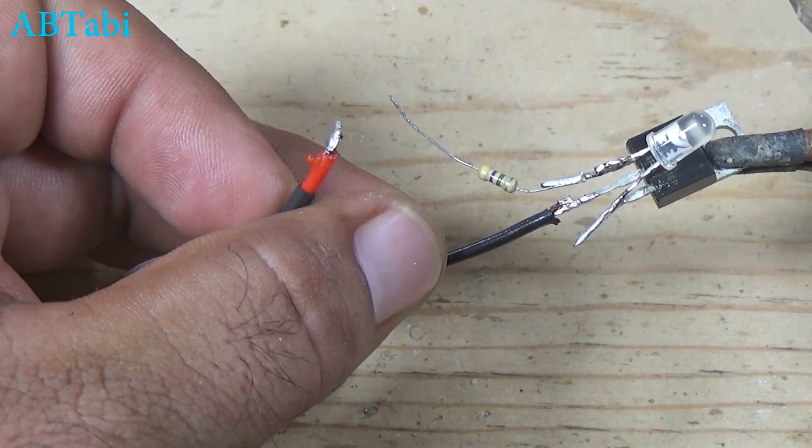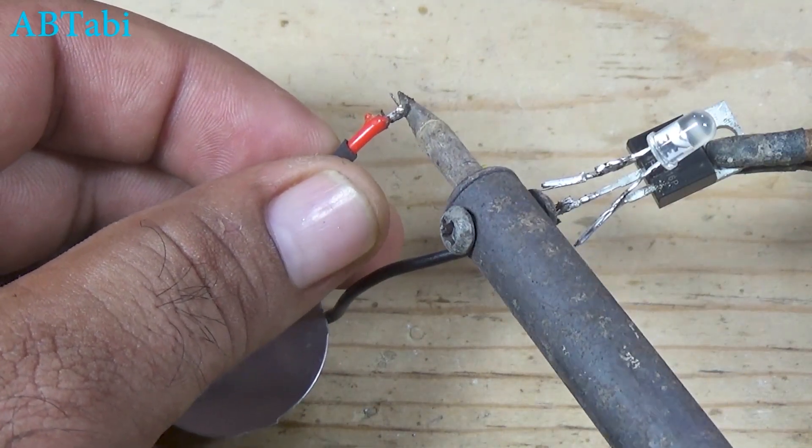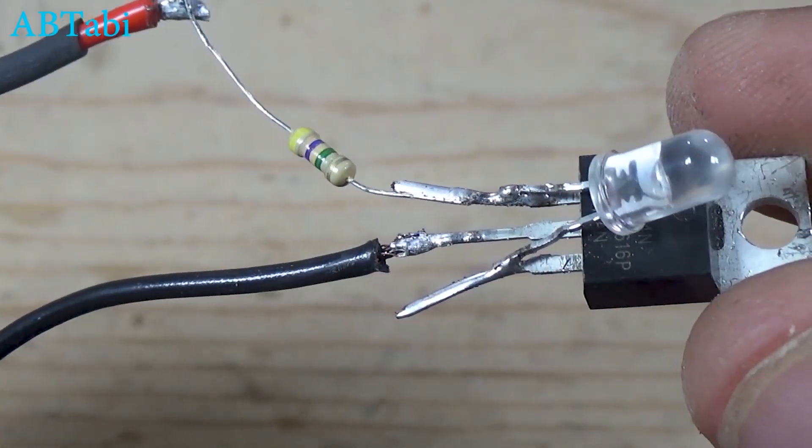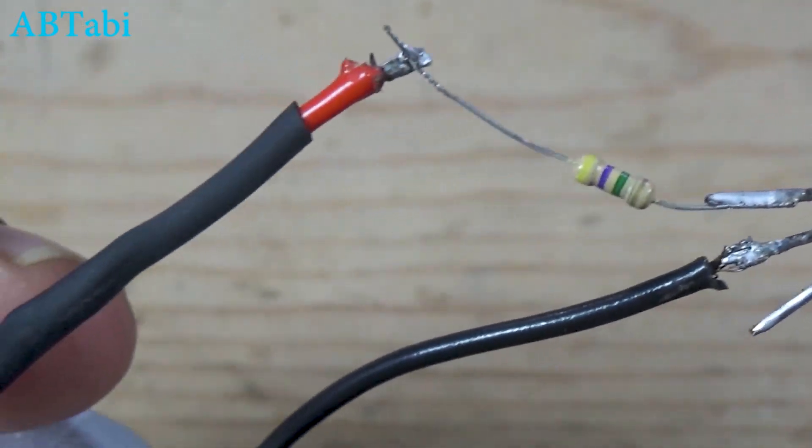Connect the positive side of the LED light to one side of the 15 ohm 1 watt resistor. Then connect the other side of the 15 ohm resistor to the 4.7 megaohm resistor.